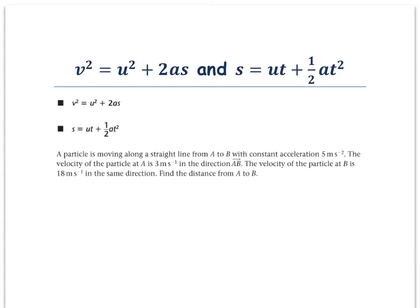We're going to look at the last two equations we need to know for our Mechanics 1 exam. These are the last two SUVAT equations, so once we've learnt these two — because we have to learn them as they're not on our formula sheet — we'll have our full five. V squared equals U squared plus 2AS, and S equals UT plus a half AT squared.